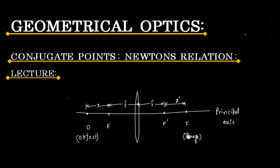Since light rays are reversible, it follows that an object placed at I will give rise to an image at O.